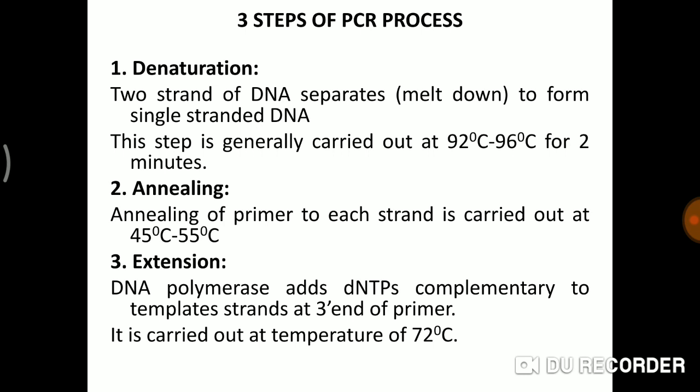The second step is annealing of primers to each chain, carried out at 45 to 55 degrees. In the first step the strands separate, and in annealing we attach the primer to each strand. The primer sticks there. Then in extension, after the primer is attached, the extension mechanism takes place.